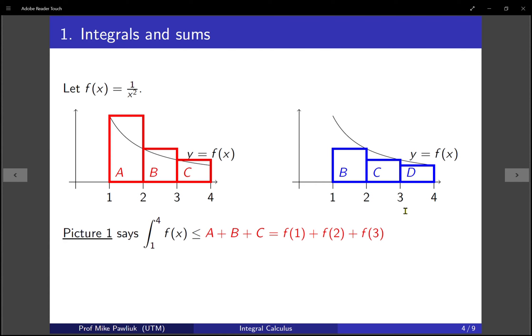Now for the second one, here instead we get an underestimate. So the integral is actually bigger than the sum of the three areas of the rectangles. What are the heights of these ones? This one is f of 2, this one's f of 3, and this one's f of 4.